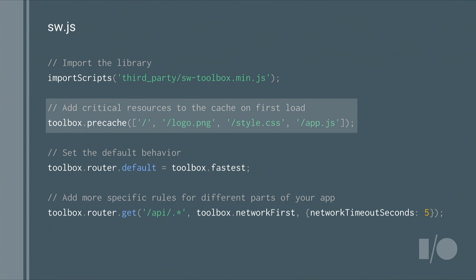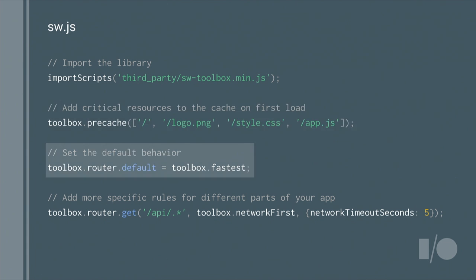As an important aside, whenever the service worker changes, the install event happens again, so this pre-cache will happen every time you update your resources, as long as you change the service worker as well. Next up, toolbox.router.default equals toolbox.fastest. The toolbox.router is the part of the system that handles matching parts of your site to the behavior you want, so here we're setting the default behavior to fastest, which I'll talk about in a moment.